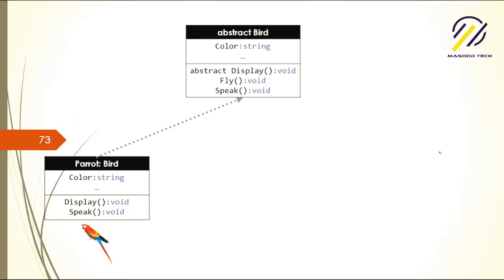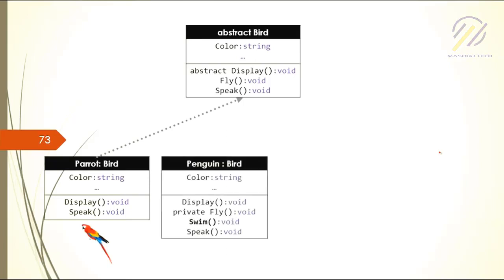When I print the display method, I see the parrot object. Let's say I have another bird which is penguin, and I inherit from bird. When I display it, I see the penguin.